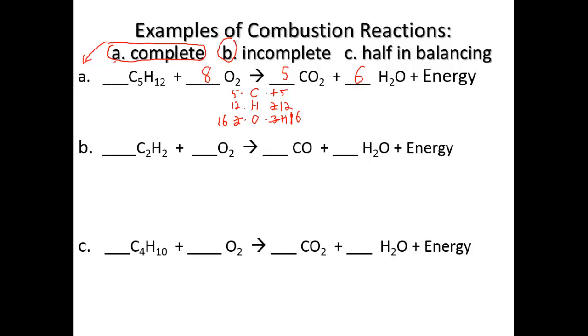In our second one, B is an incomplete reaction. Notice that carbon monoxide instead of carbon dioxide is one of our products. C2H2 plus O2 produces carbon monoxide and H2O. We start with two carbons, two hydrogens, two oxygens on the left. One carbon, one plus one equals two oxygens, and two hydrogens on the right. Start by balancing the carbons to two.